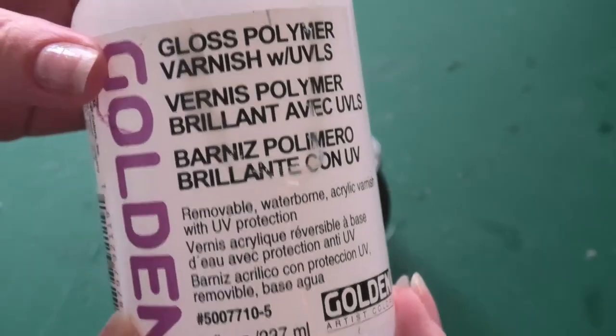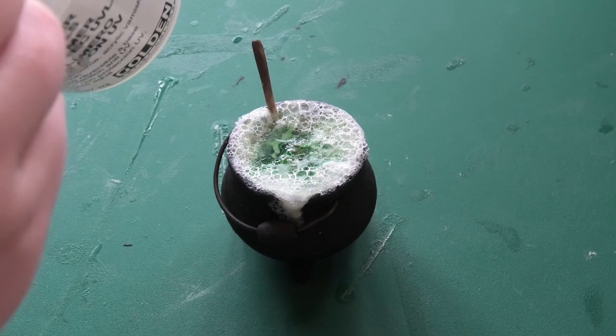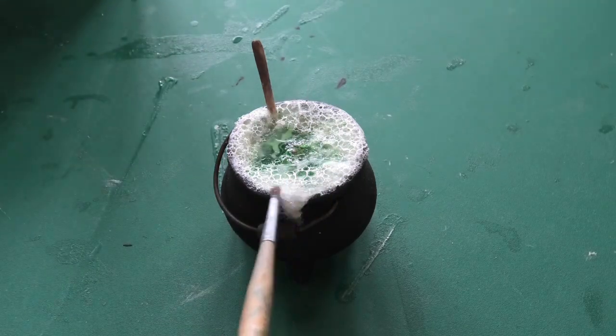To finish I added a layer of gloss varnish to add some shine to the bubbles as the resin didn't really work on top of these ones for some reason.